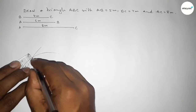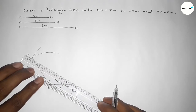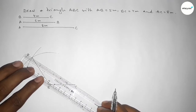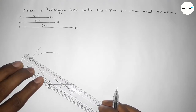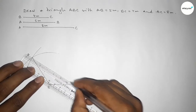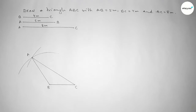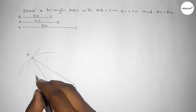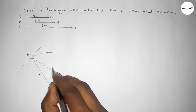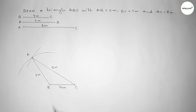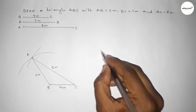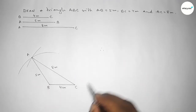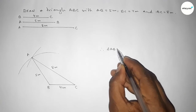Now joining A and B, then joining A and C, to get triangle ABC. The side BC equals 4 centimeters, AB equals 5 centimeters, and AC equals 8 centimeters. Therefore triangle ABC is complete.